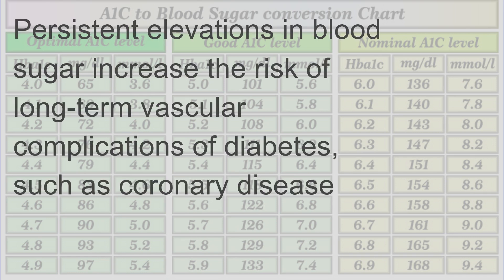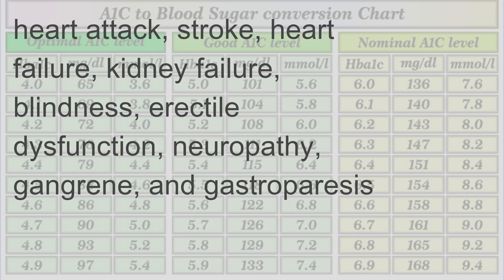Persistent elevations in blood sugar increase the risk of long-term vascular complications of diabetes, such as coronary disease, heart attack, stroke, heart failure, kidney failure, blindness, erectile dysfunction, neuropathy, gangrene, and gastroparesis.